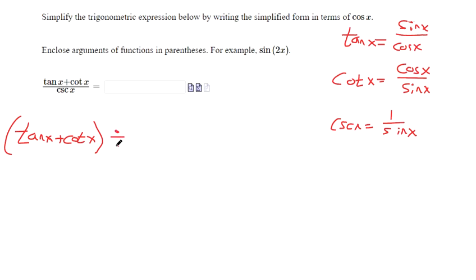I'm rewriting it. Instead of a fraction, I'm using the division symbol. And now, if I'm dividing two things, I know I flip and I multiply. And actually, before that, let's put cosecant in terms of sine. It's one over sine of x.